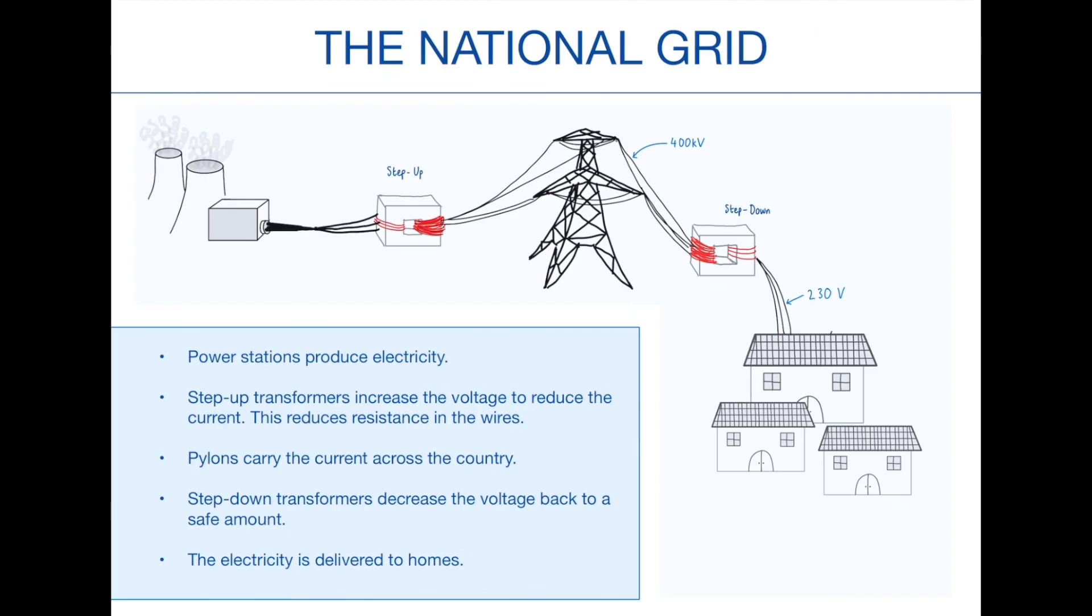And then our final slide is the national grid. What is going on here? The power stations produce electricity, and then the aim of the national grid is to get that electricity to the homes that we live in. To do this, there are three major processes that happen.